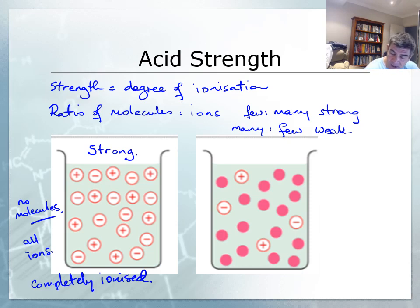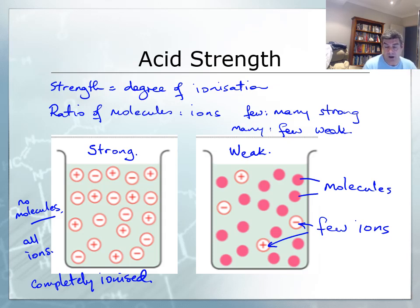On the other hand, we have a weak solution over here. You can see there are lots and lots of molecules. These molecules have not ionized, and we have only few ions. So where we have a lot of molecules and not many ions, the ratio of molecules to ions is high. Lots of molecule forms and very few ion forms. And as a result, we have a weak solution. So strength is related to degree of ionization. Do we have lots of molecules or do we have lots of ions? Lots of ions equals strong.